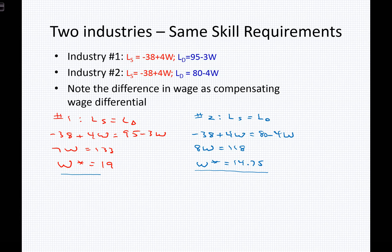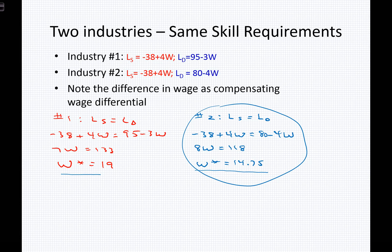If these two industries have similar skill requirements — attracting similar workers — but are paying different wages, what can we presume? The firm paying the lesser wage, industry two, is presumably giving something to workers not reflected in the wage itself: some benefits, some utilities, some compensating wage differential. Perhaps they offer health insurance, vacation benefits, a great working environment, or other perks that provide workers utility they aren't getting at the higher-wage firm.